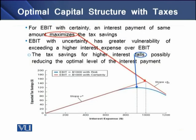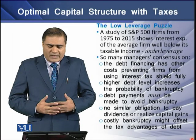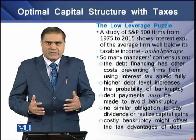In the graph, we see that for a firm with EBIT known with certainty, an interest payment of the same amount can maximize tax savings — as shown in the case where EBIT is one thousand dollars and interest expense equals that amount. Where the firm cannot predict EBIT very precisely, EBIT with uncertainty creates greater vulnerability of interest expense exceeding EBIT. As a consequence, tax savings for higher interest fall, possibly reducing the optimal level of interest payments.